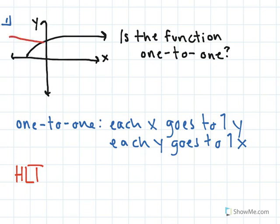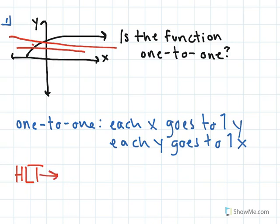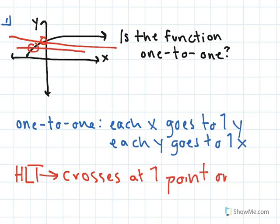We're going to draw our horizontal line at a couple of different points just to make sure it's accurate. The horizontal lines only cross the graph at one point, so our function is one-to-one.